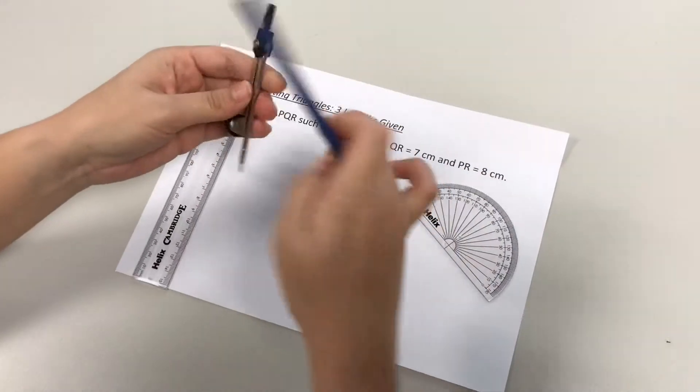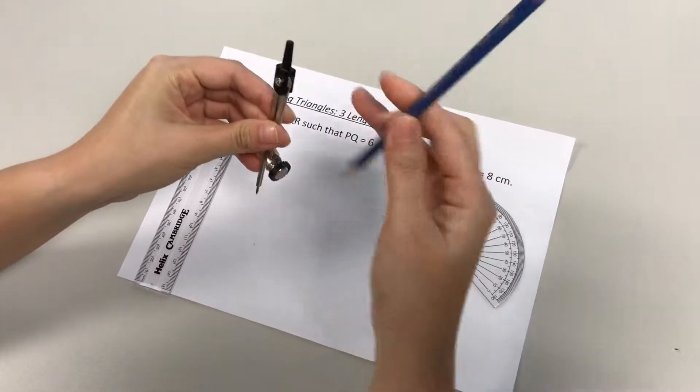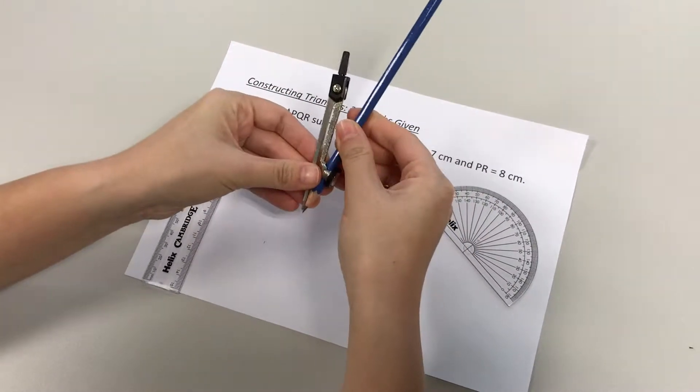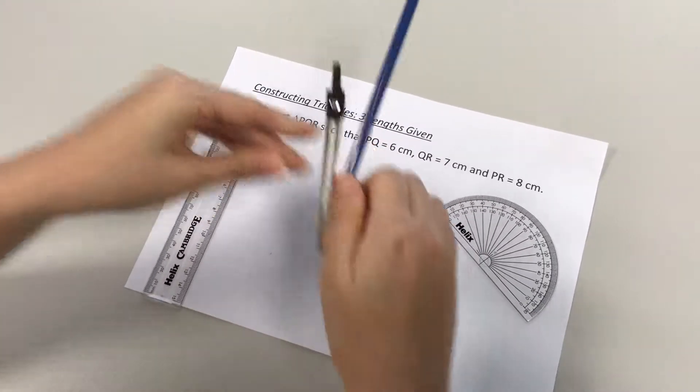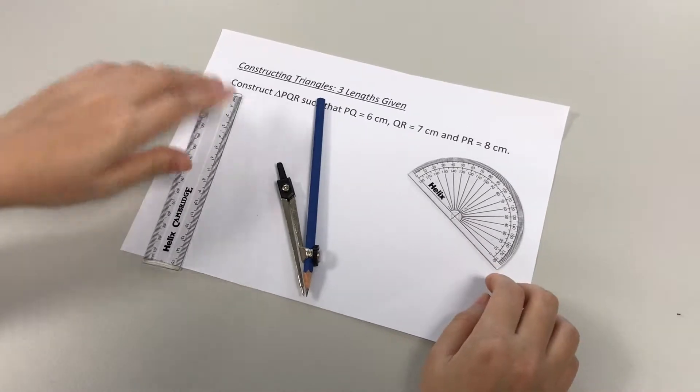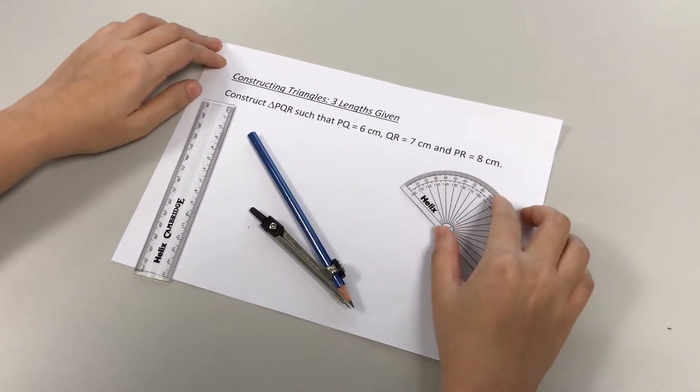Okay, so step one, get your compass ready by placing the pencil in. And so here we have the three items that we need and we're ready to start drawing the triangle.